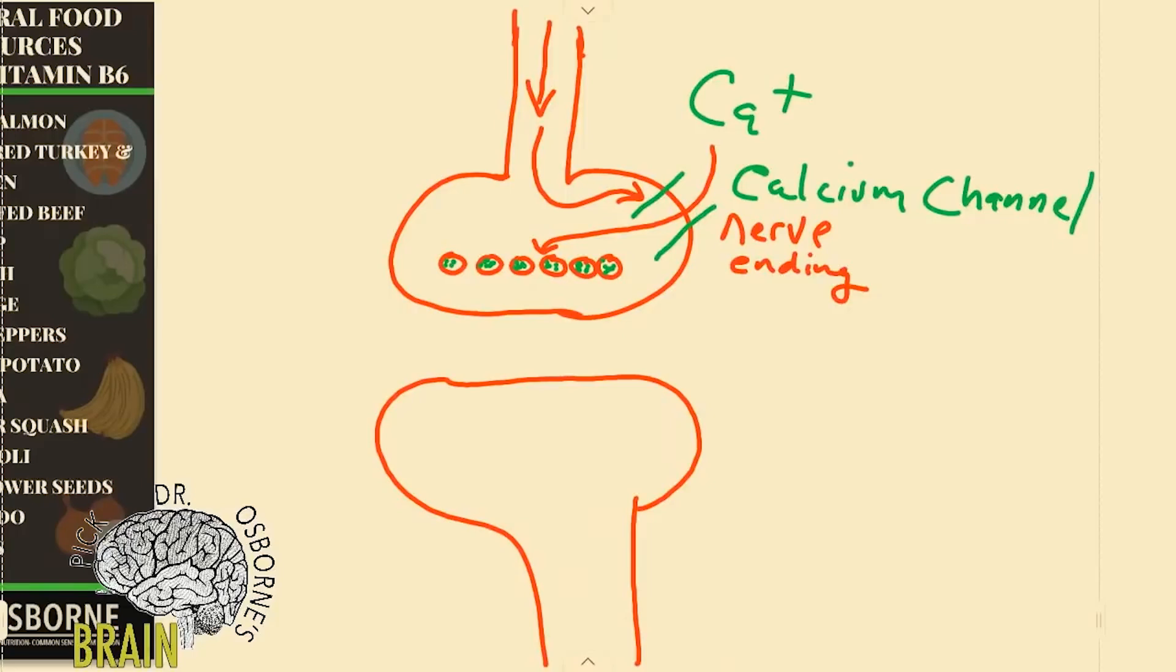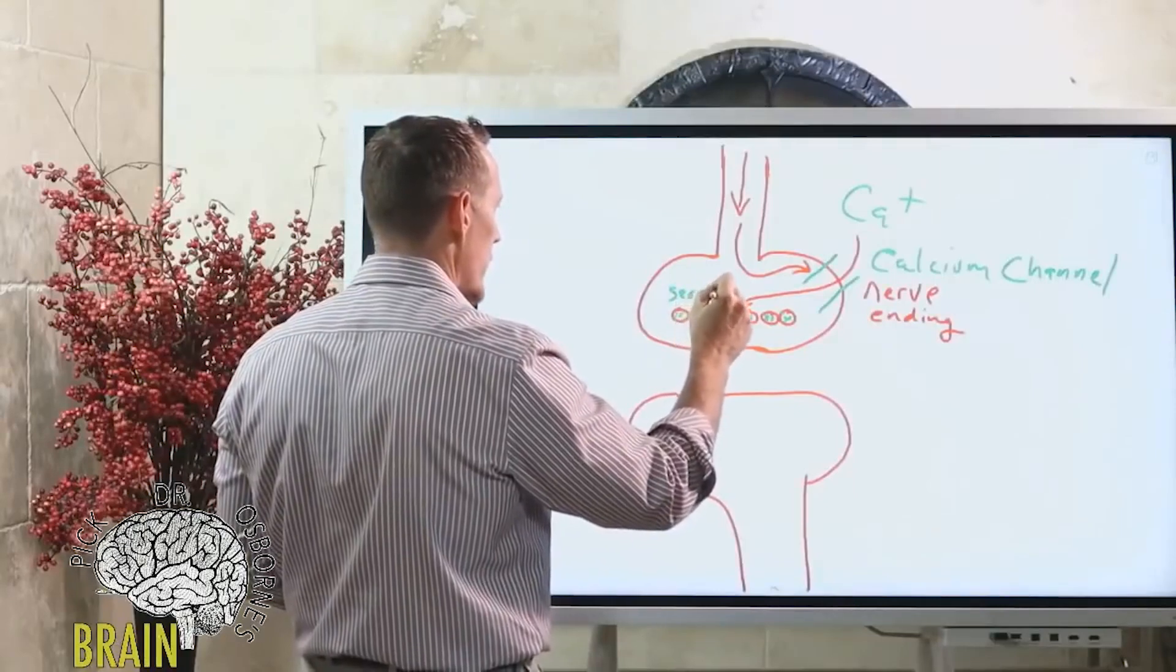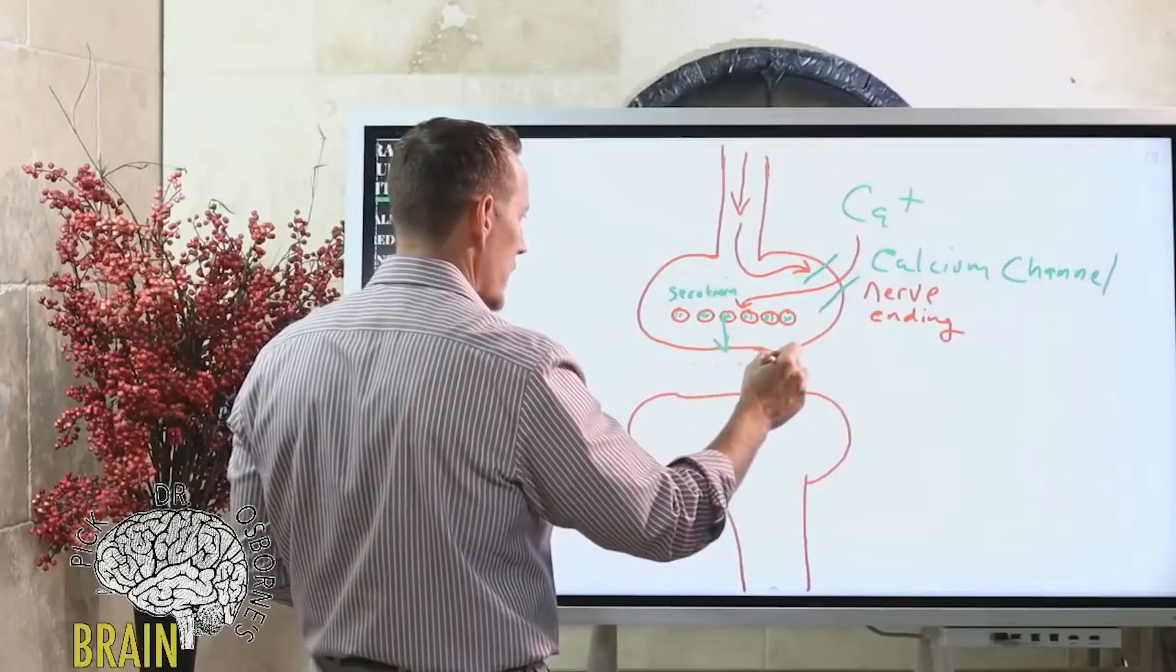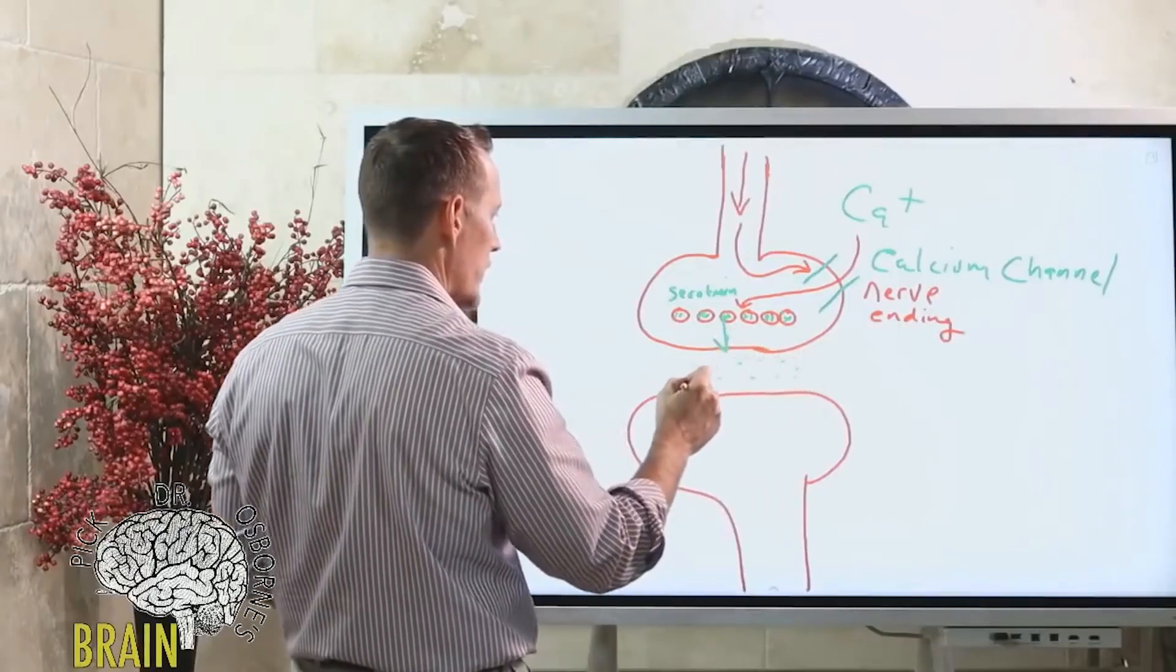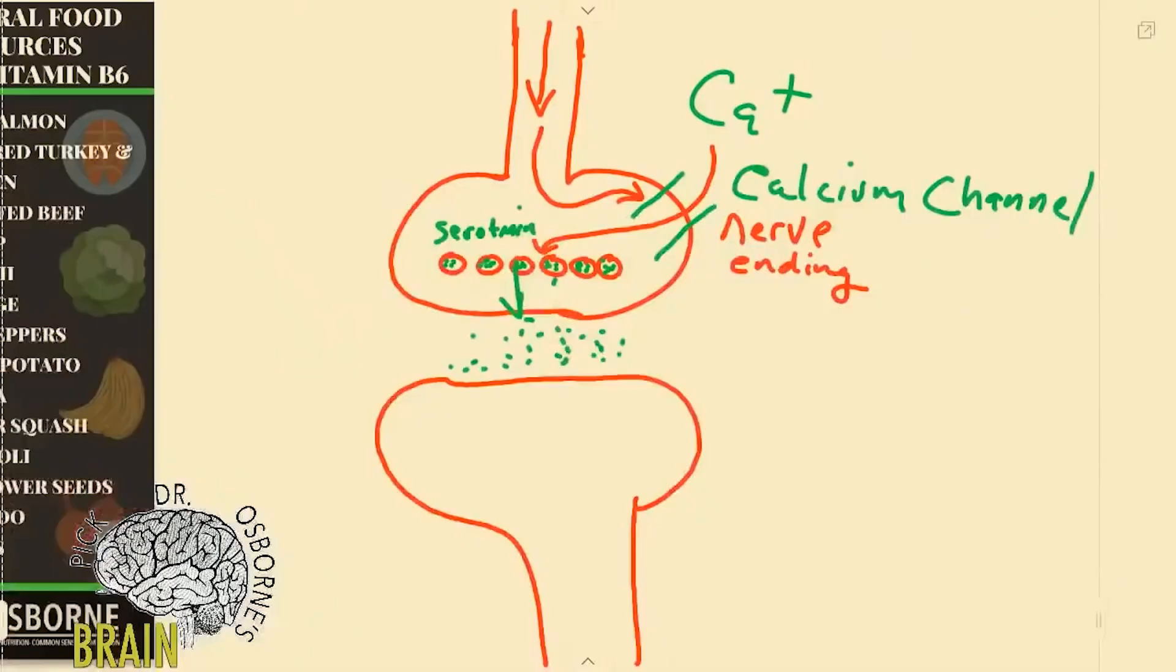It tells these little vesicles, these little bubbles that are full of serotonin, to dump the serotonin in the middle. So this serotonin, all of it, is dumped. These vesicles migrate to the edge of the cell and they dump their serotonin into this cleft.